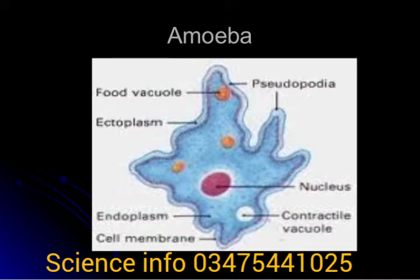Amoeba has pseudopodia which act as moving food vacuoles, ectoplasm as the outward layer, and a nucleus. They have a contractile vacuole for balancing excess water inside the amoeba, and they have endoplasm. It also consists of a cell membrane, cytoplasm, and nucleus.